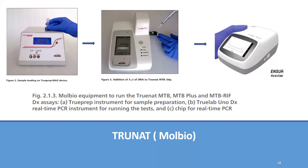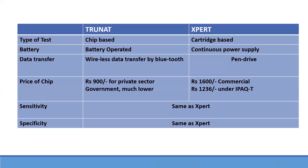Next comes TRUNAT. With TRUNAT, you insert a chip and it works similarly to Expert; sensitivity and specificity are comparable. When you add DNA to the TRUNAT chip, you simply get the result. Comparing the two: TRUNAT is chip-based while Expert is cartridge-based; TRUNAT is battery-operated while Expert requires continuous power supply. TRUNAT has wireless data transfer; Expert uses a pen drive. The chip price for the private sector — Expert costs around 1,600 rupees commercially, while TRUNAT is approximately 1,236 rupees.